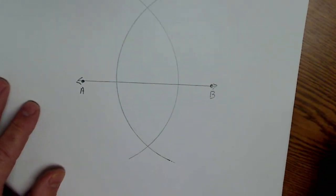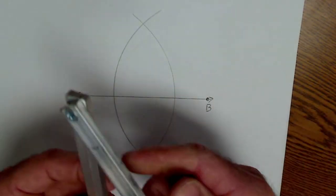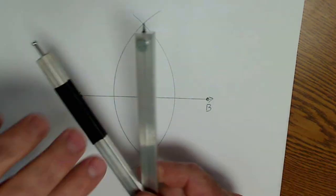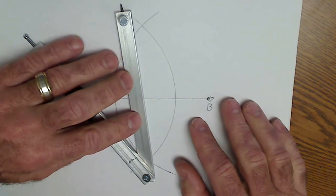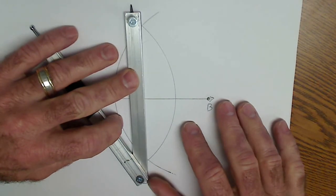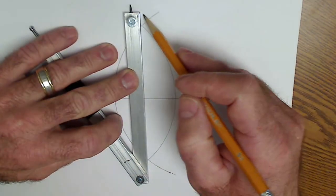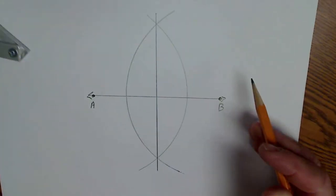Then once I have those two arcs created, I use a straight edge to connect the points of intersection, and there's my perpendicular bisector.